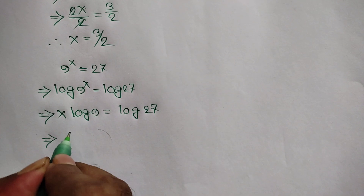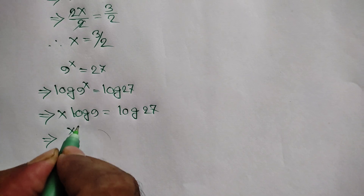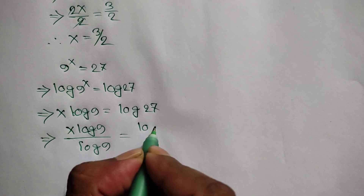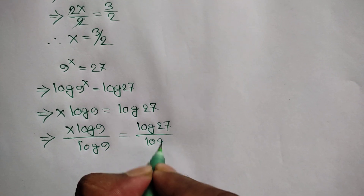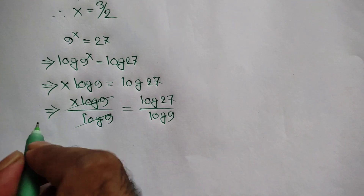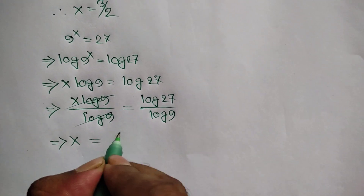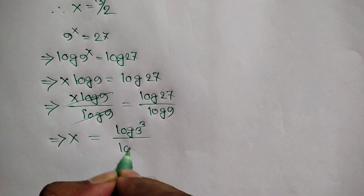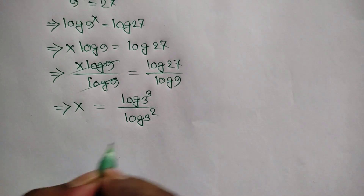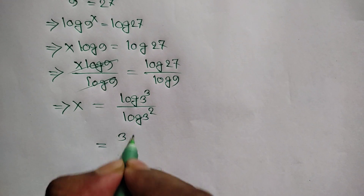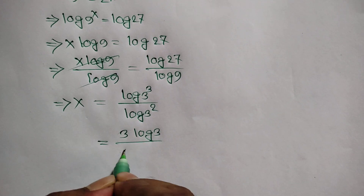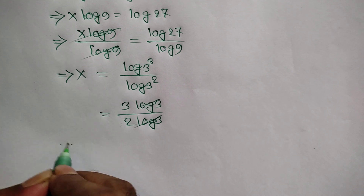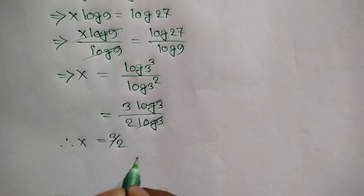We need the value of x, so divide both sides by log of 9. We can write x equals log of 9 over log of 9, and this log of 9 cancels out. So x is equal to: log of 27 we can write as log of 3 cube, and log of 9 we can write as log of 3 square, which gives 3 log of 3 over 2 log of 3. This log of 3 cancels out this log of 3, so finally the value of x is equal to 3 over 2.